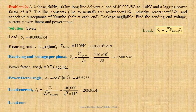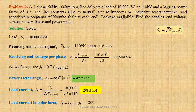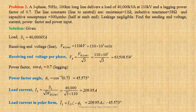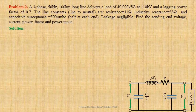Load current may be written in polar form as IL equals IL at an angle minus φL, that is 209.95 ampere at an angle minus 45.573 degrees. This may be written in Cartesian form as 146.965 minus j times 149.9343 ampere.